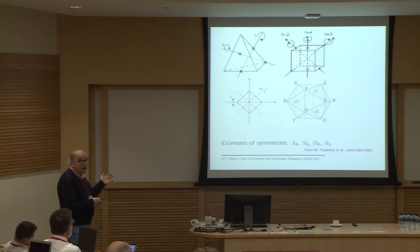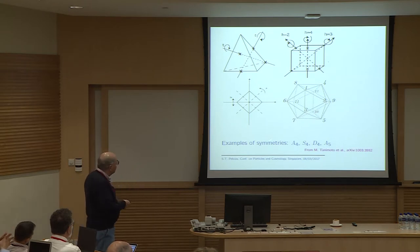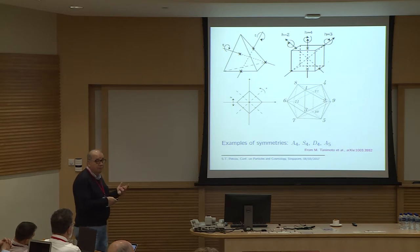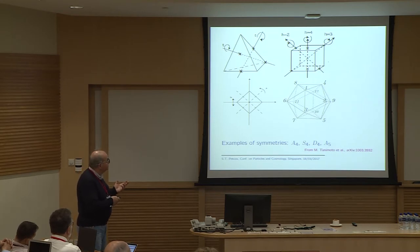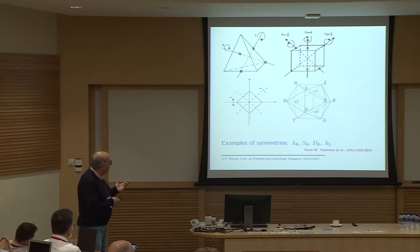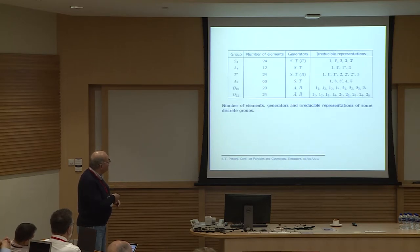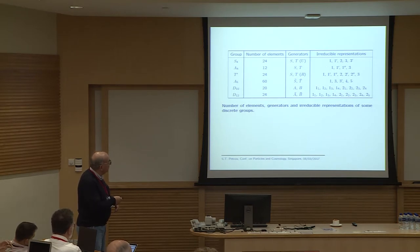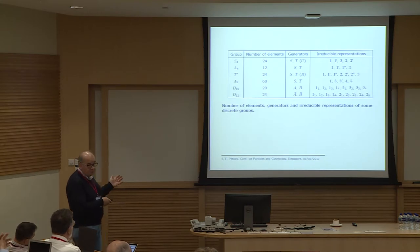These symmetries are symmetries of geometrical objects: A4 is the symmetry of the regular tetrahedron, S4 is the symmetry of the cube, Dₙ is the symmetry of the square, and A5 is the symmetry of the icosahedron. Some information about group properties — number of elements, generators, and irreducible representations — is important for these considerations.